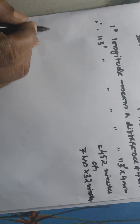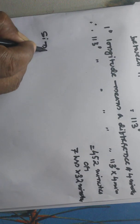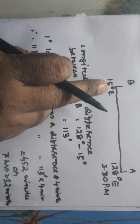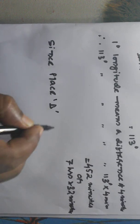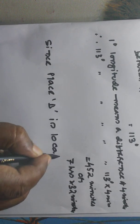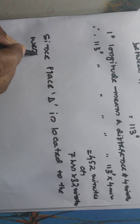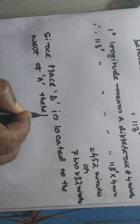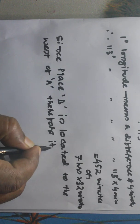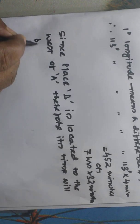Now we have to give a statement: since place B is located to the west of A, therefore its time will be behind. So time at B equals 3:30 p.m. minus 7 hours and 32 minutes.